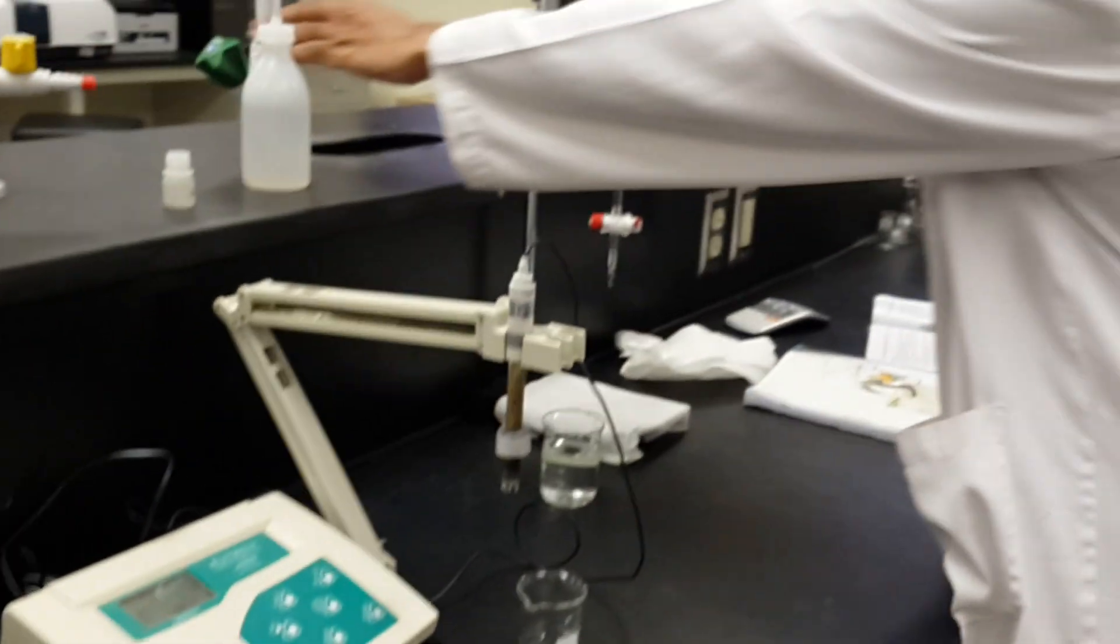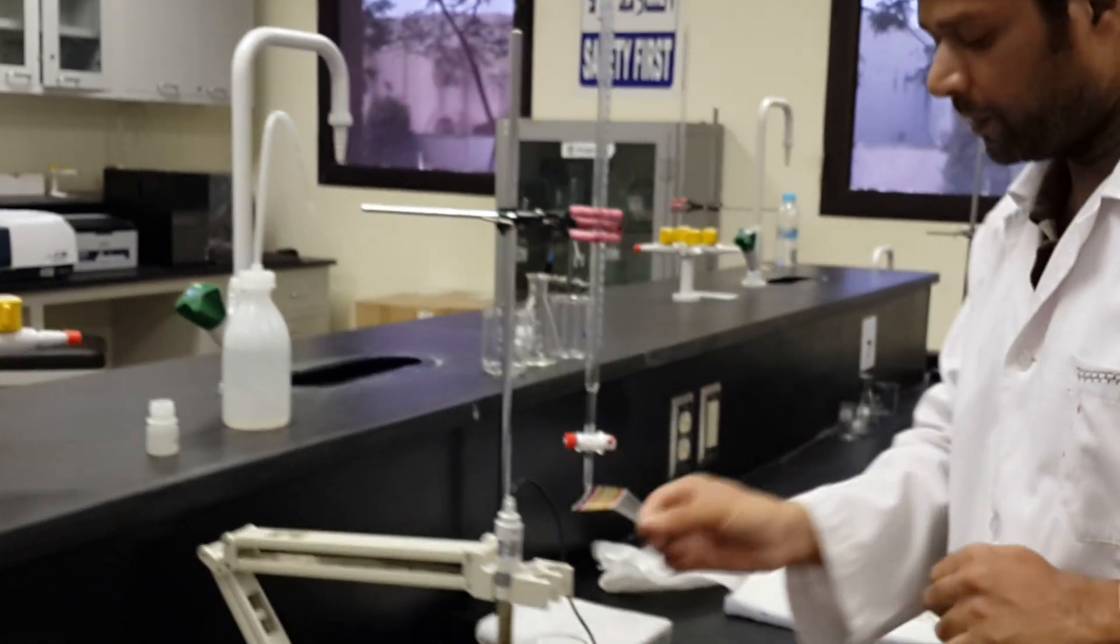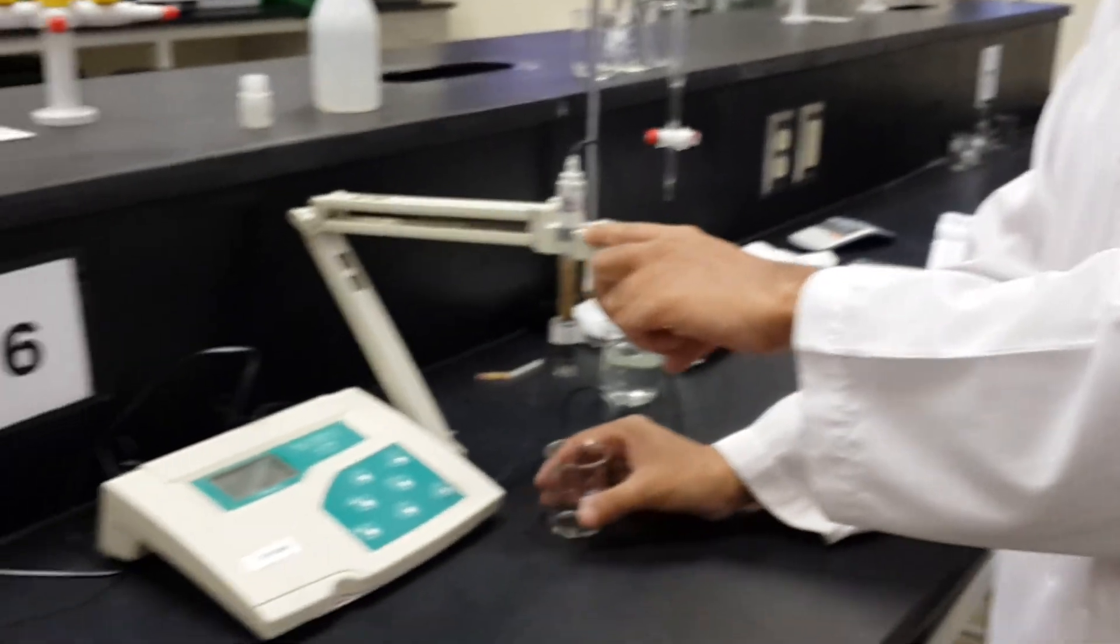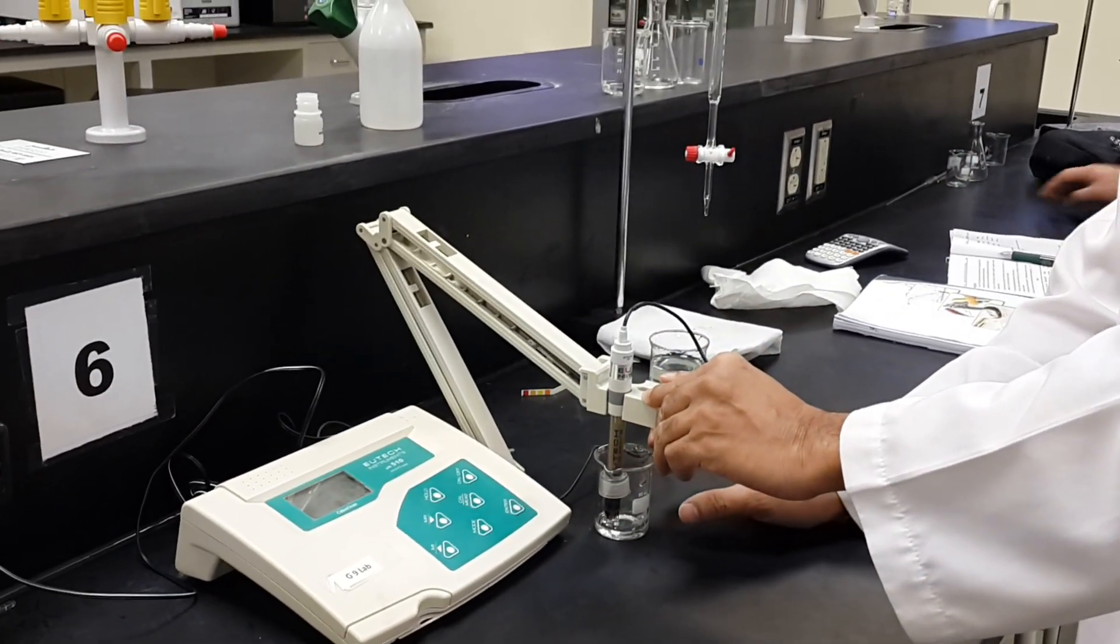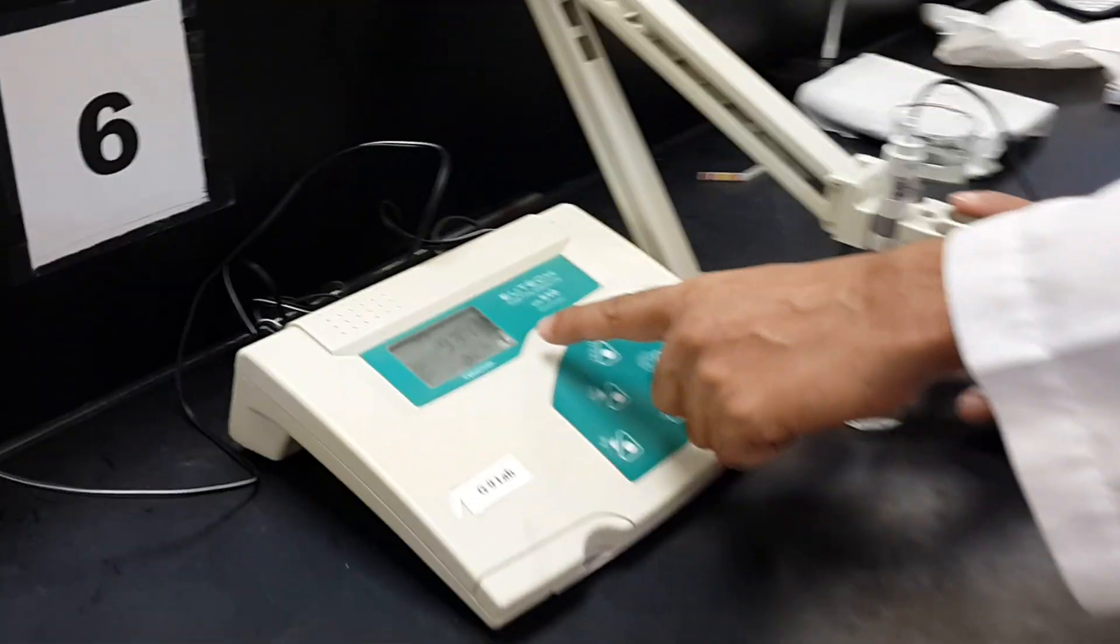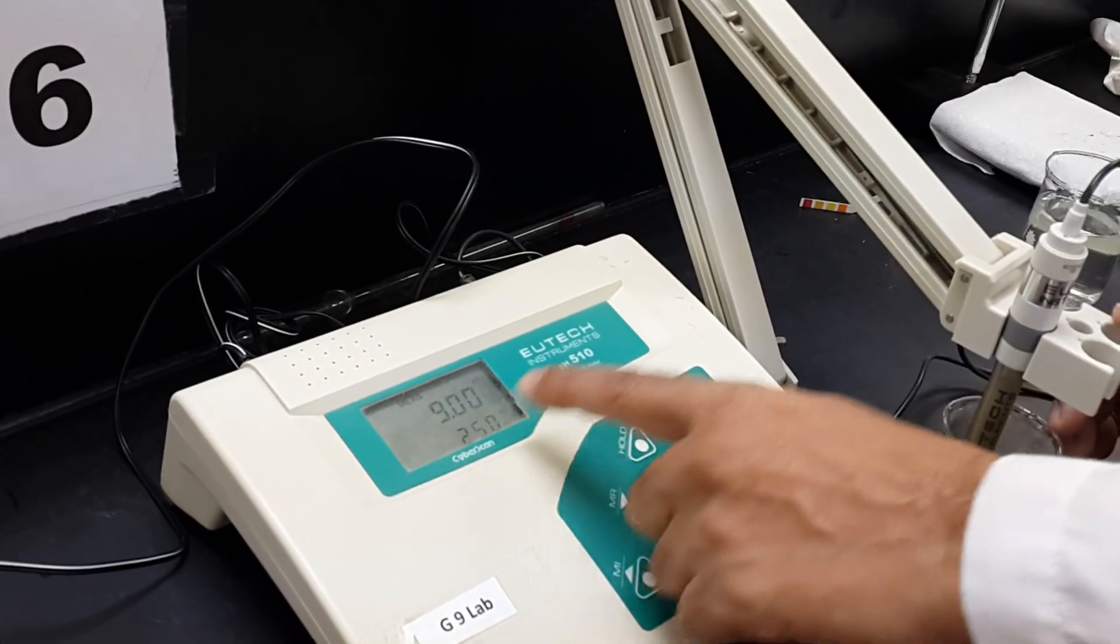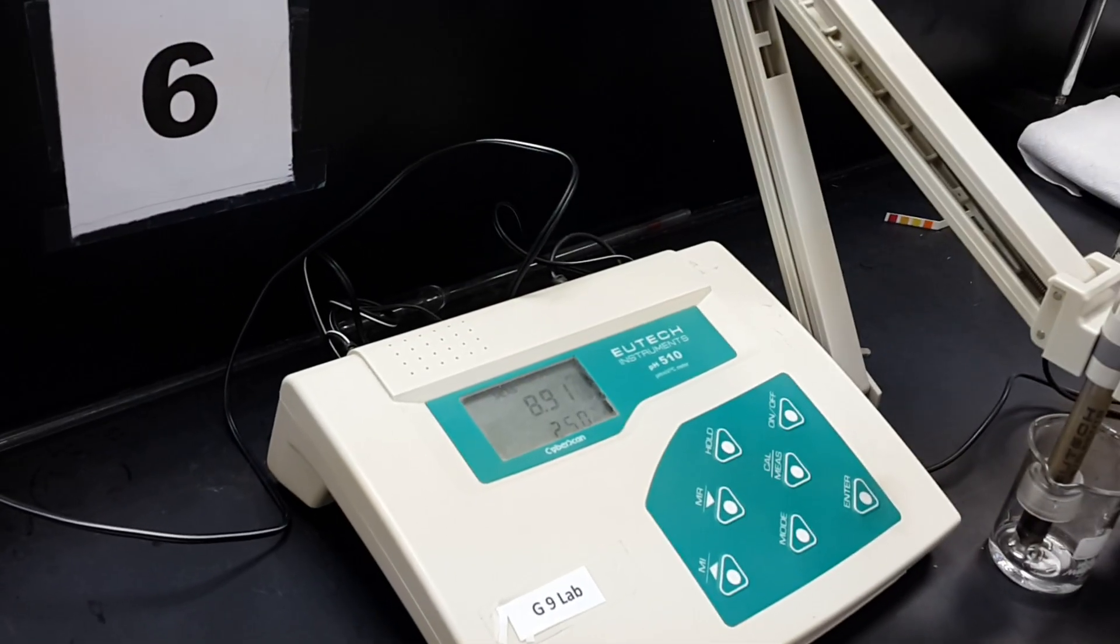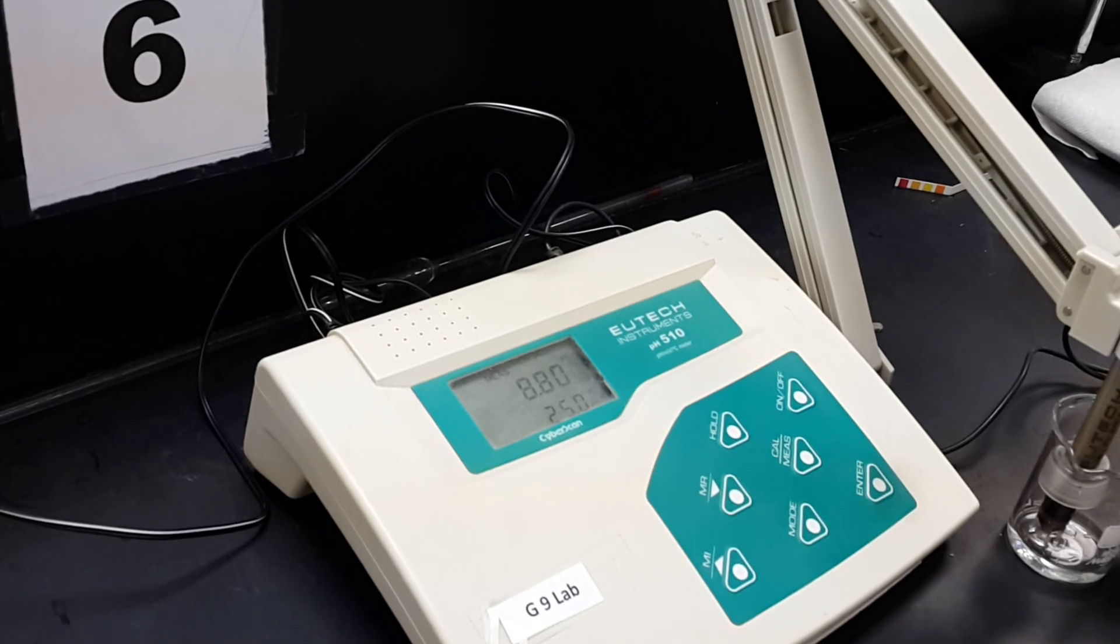This is pH paper. Now clean the pH paper and keep it somewhere. Now dip the glass electrode. Check the reading here. When the pH meter says ready, you have to record the reading in your manual.